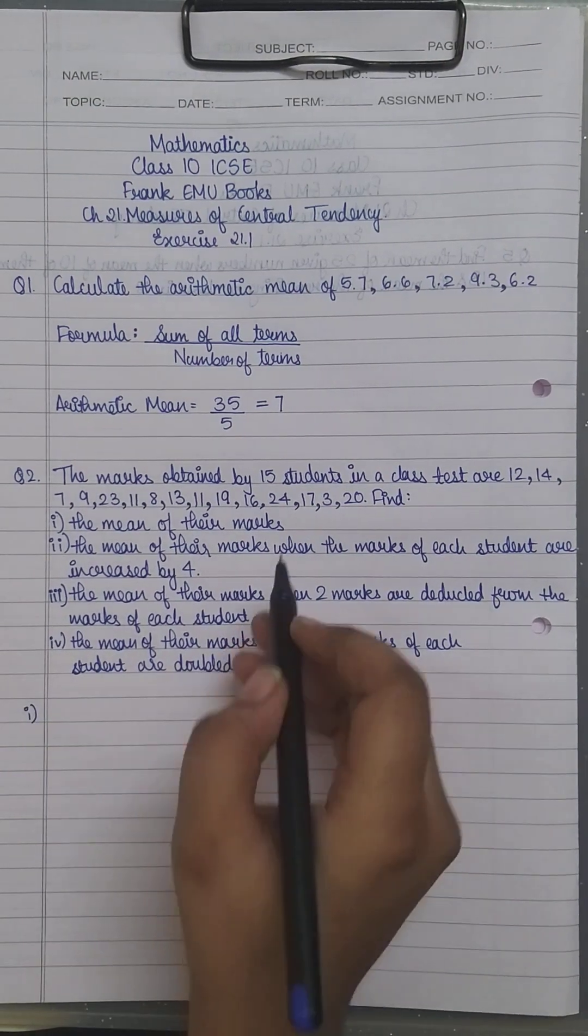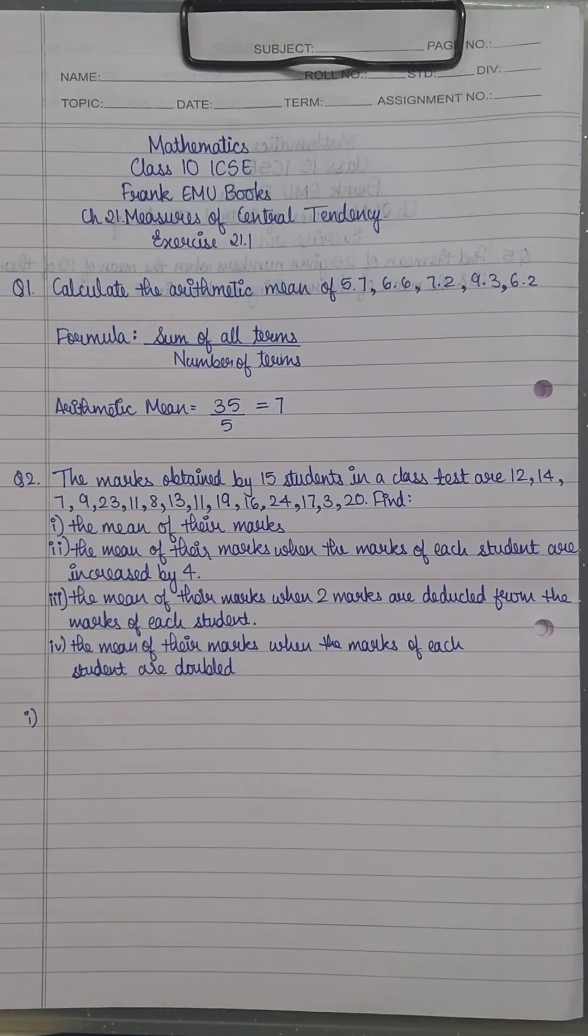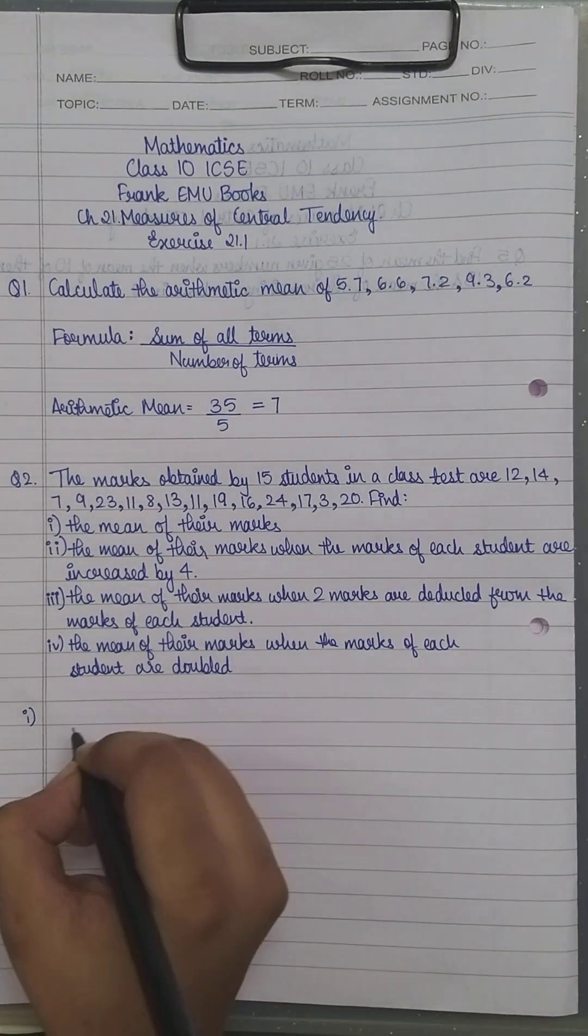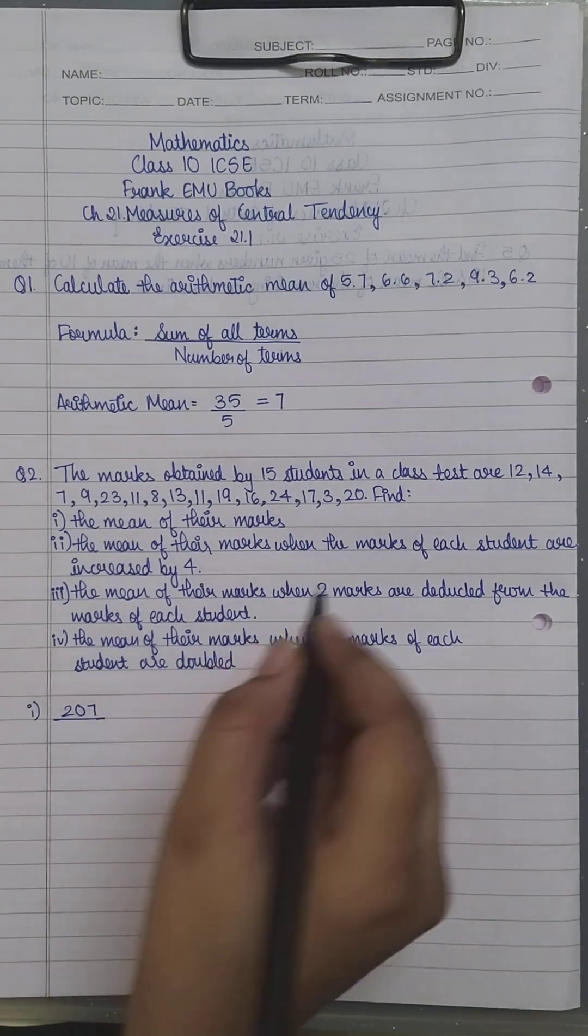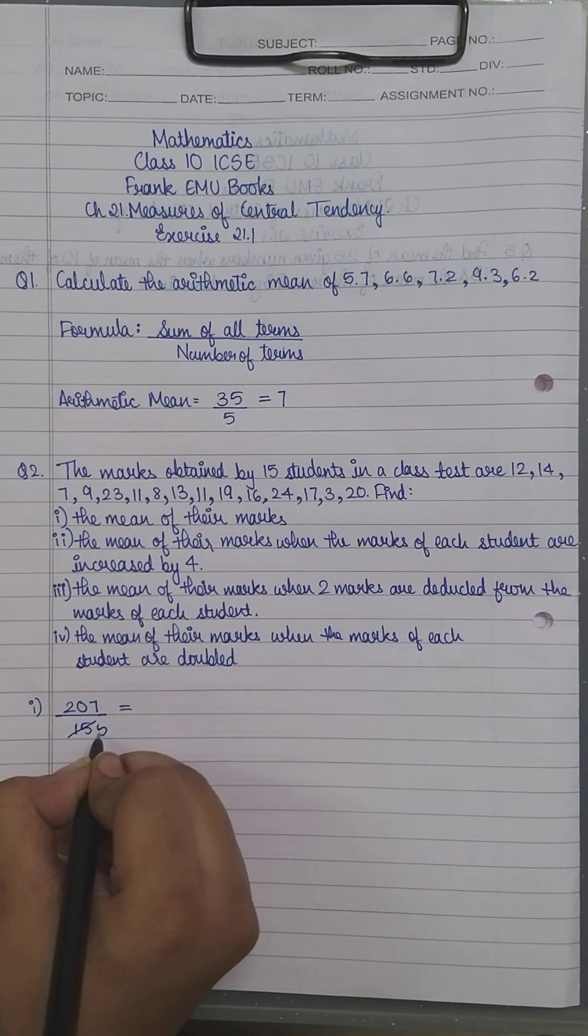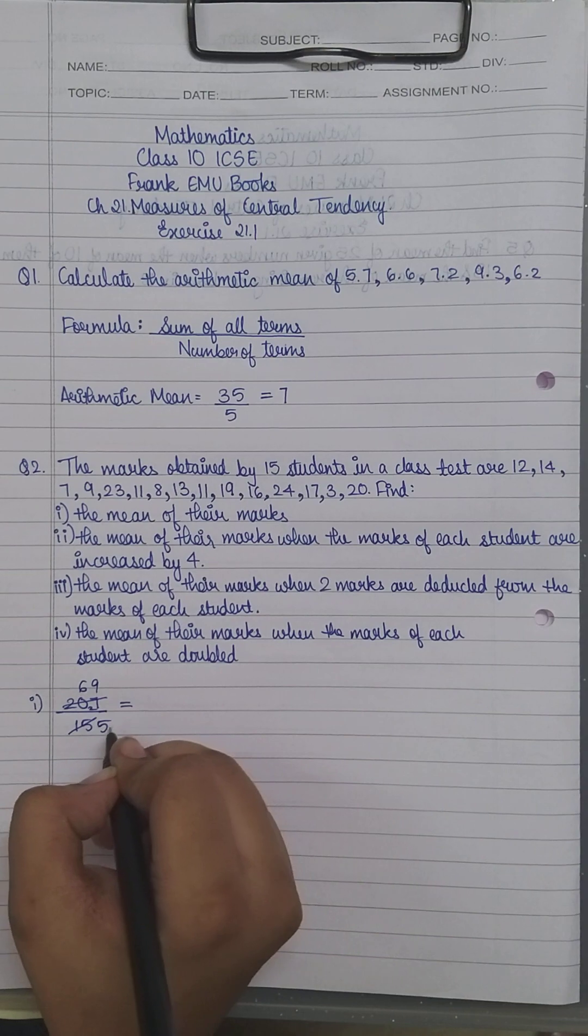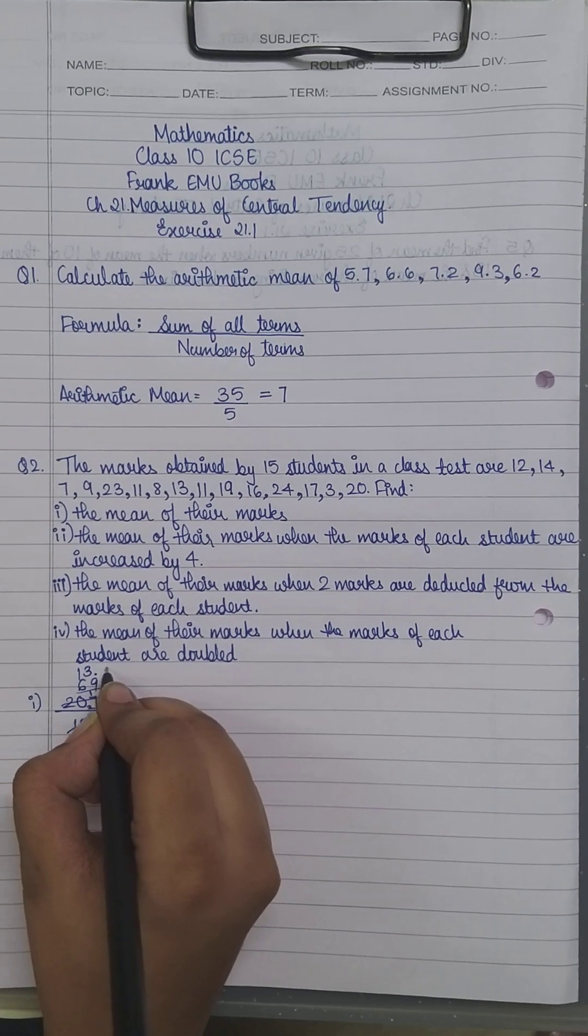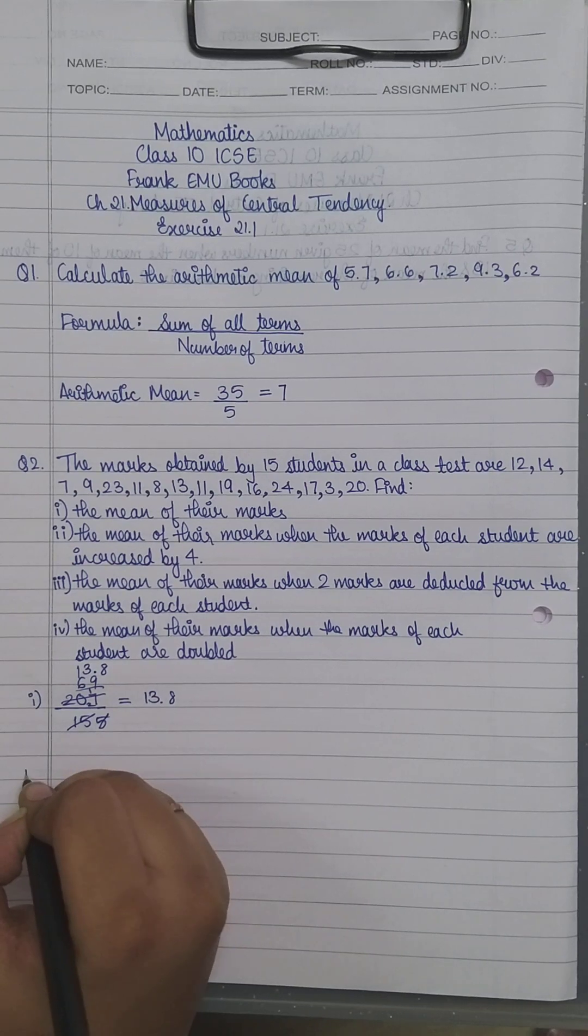For part 1, you need to find the sum of these marks. I've done that beforehand - it's 207. So the mean will be 207 divided by 15. When you do that: 3×5=15, 3×6=18, 3×9=27, dividing gives you 5×1=5, 5×3=15, and 5×8=40. So you have 13.8.